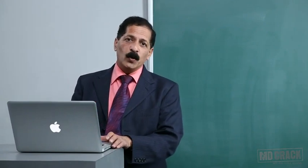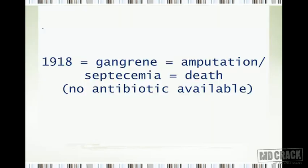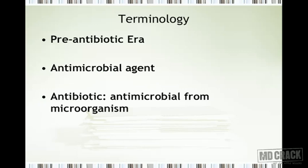Hello, my dear students. In this module we start discussion of chemotherapy — an introduction to chemotherapy and penicillins. I'm taking you back to 1918, the period of World War One. At that time, if you got a gunshot wound it meant gangrene, because there was no antibiotic or antimicrobial agent available. Infection meant gangrene, amputation, septicemia, and death. This was called the pre-antibiotic era.